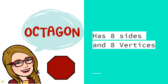Next up is a favorite of mine — an octagon. An octagon has eight sides and eight vertices. I can remember an octagon because I know that an octopus has eight arms and eight legs. Also, an octagon reminds me of a stop sign.